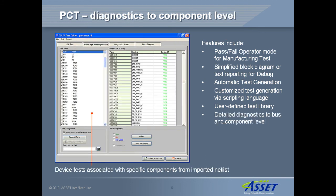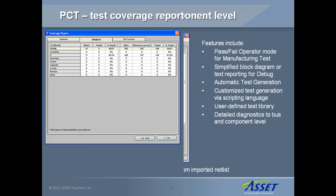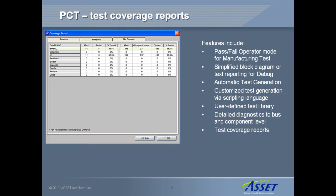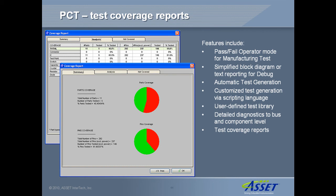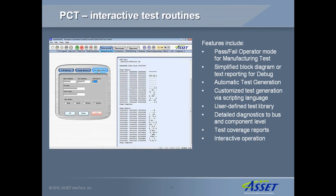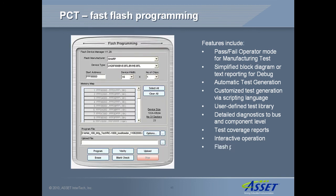You can get a detailed diagnostic report to bus and component level. During test development, the board's netlist is imported. Components are associated with specific tests within the overall board script, and failure probabilities are assigned. This procedure allows detailed and summarized coverage reports to be displayed. PCT can also be operated in interactive mode to run individual functions such as read and write memory, allowing a particular problem to be analyzed in great detail. And fast flash programming is also included.